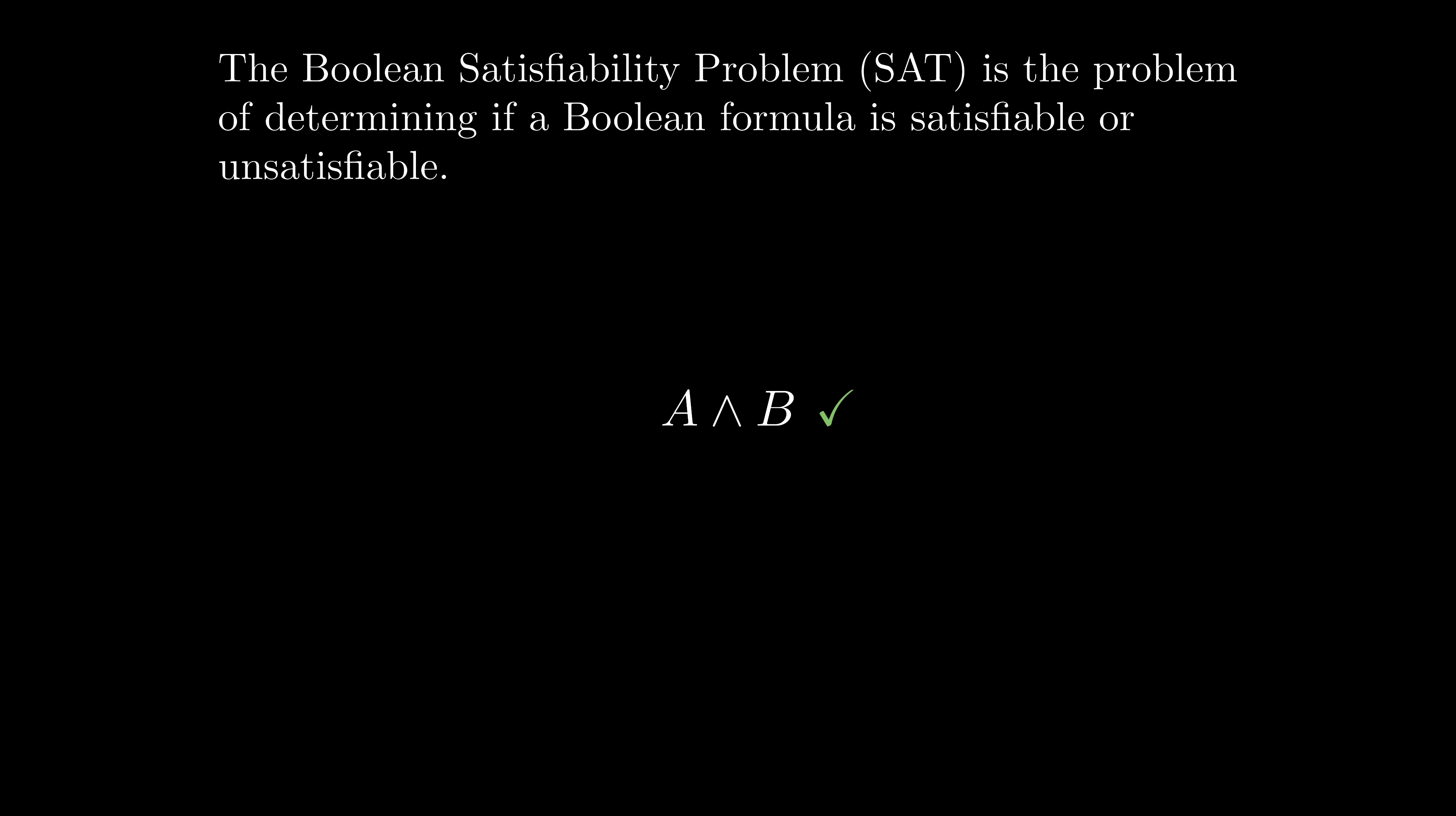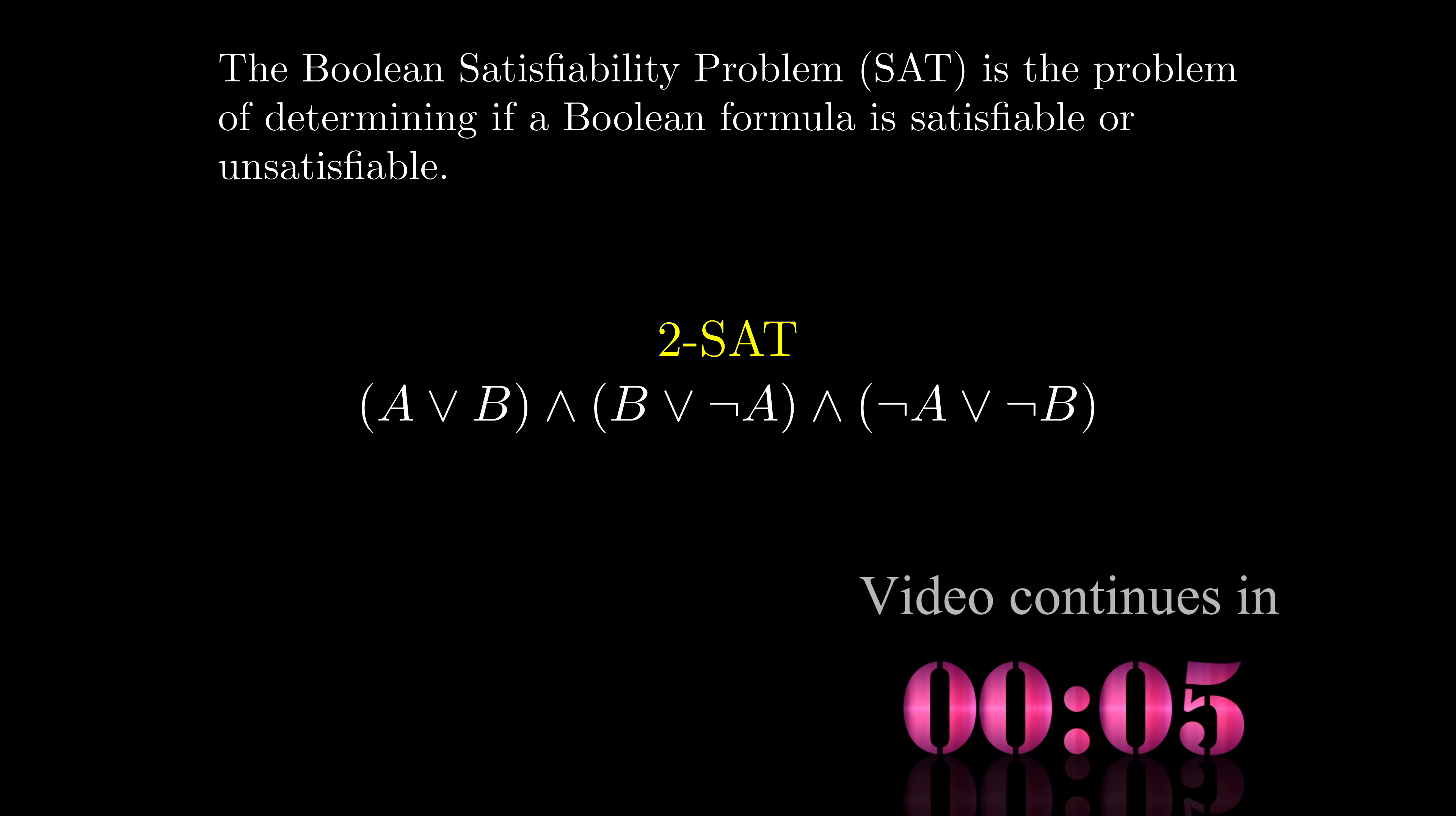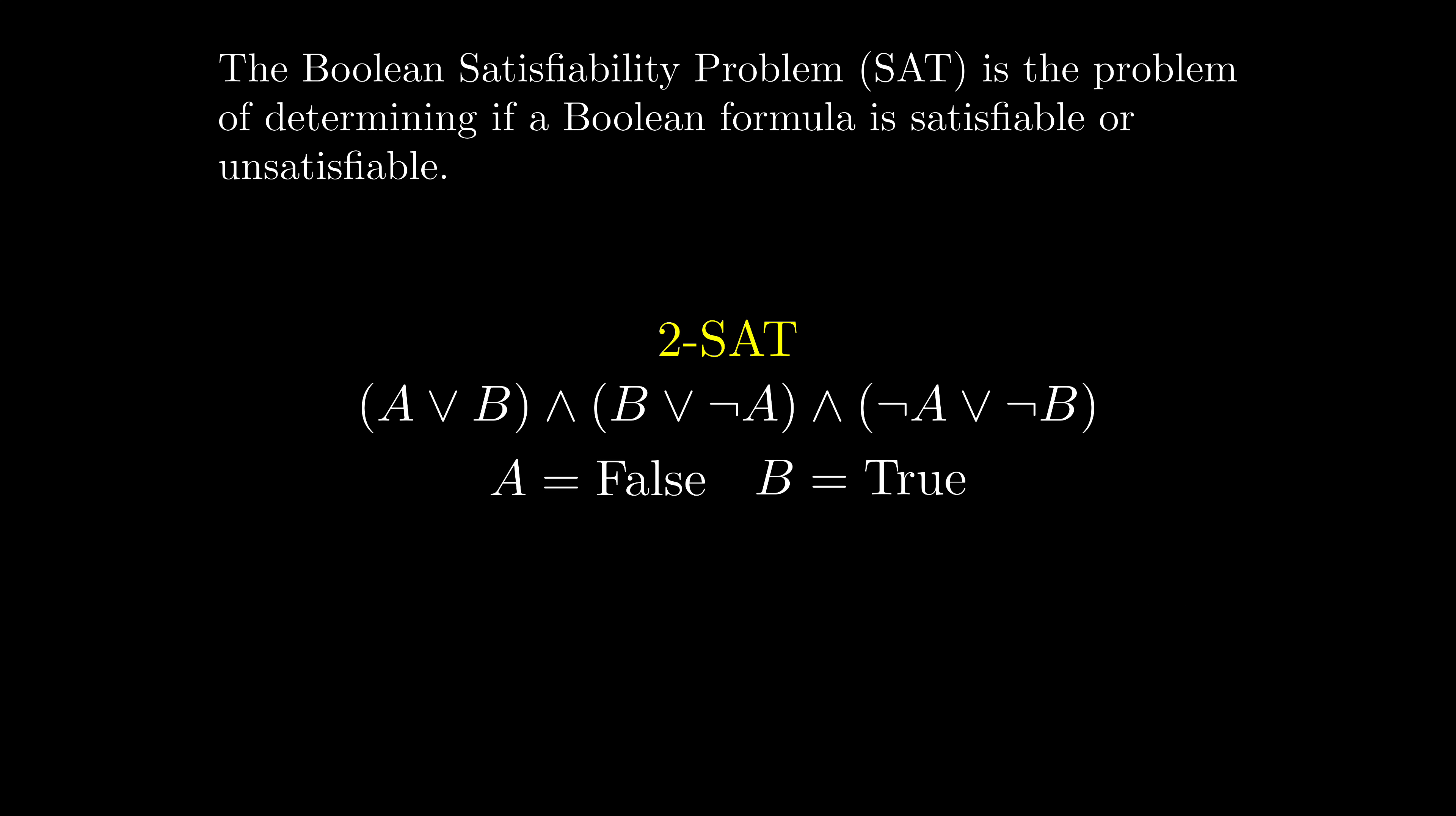However, A ∧ ¬A is not satisfiable. Whether we pick A as true or as false, this formula evaluates to false. A formula is called 2SAT if each clause contains at most two variables. Can you find A and B to satisfy this formula? 2SAT problems are not that difficult, and in fact they are significantly simpler than 3SAT problems.